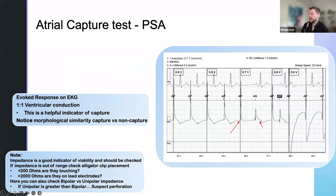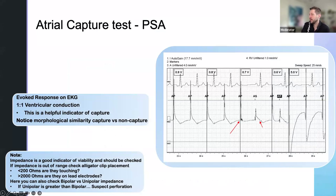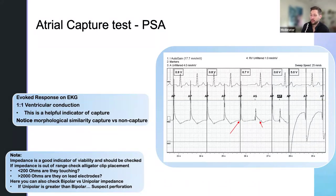Looking at the deep dive on the atrial capture test: clear one-to-one is a helpful indicator of capture. Morphologically, capture versus non-capture look very similar. We didn't capture here, and we did here — you could argue it's a little bit different morphology, but very, very similar. If you're just going off the spike, you'll be tricked. Always make sure to look for other indicators, because I've seen it where people have set thresholds much lower and set output sub-threshold as a result.